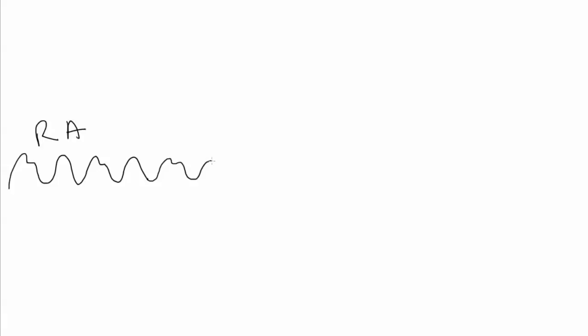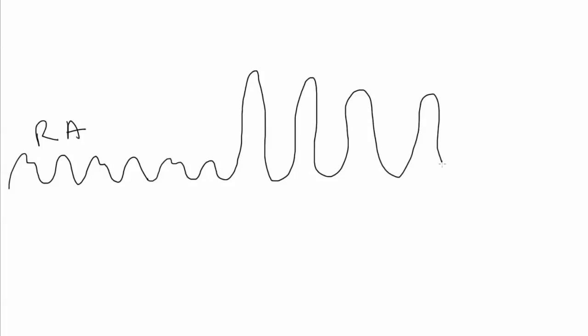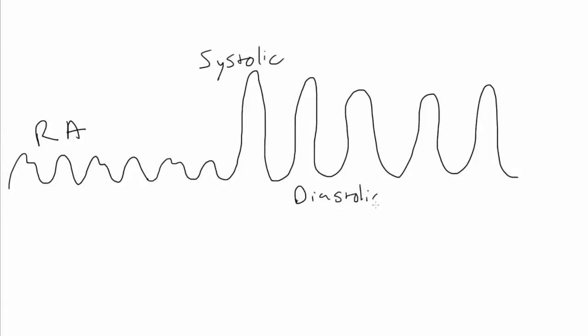The right atrial waveform has a two-part waveform with the C wave and the A and the V. As you pass the catheter, what you'll look for is the waveform to change — you're going to see the systolic pressure get a lot higher, and the diastolic pressure will stay fairly similar. So you see the right atrial waveform with the A and the V, and then all of a sudden you get a much higher and much lower waveform, with the systolic pressure up high and the diastolic pressure down low.